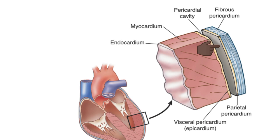Mesothelium contains squamous epithelial cells which secrete a small amount of fluid that lines the pericardial space. This fluid prevents friction and allows for movements of the heart within the pericardium when it contracts and relaxes. The inner visceral pericardium lines the surface of the myocardium. It is made up of flattened epithelial cells and is also known as the epicardium.